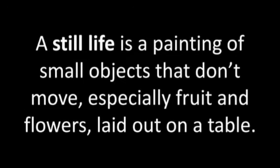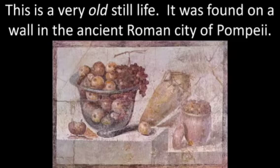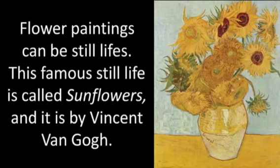A still life is a painting of small objects that don't move, especially fruit and flowers laid on a table. This is a very old still life — it was found on a wall in the ancient Roman city of Pompeii. Flower paintings can be still life. This famous still life is called Sunflowers and it is by Vincent van Gogh.